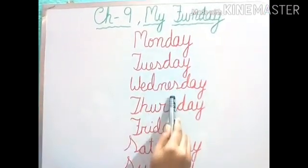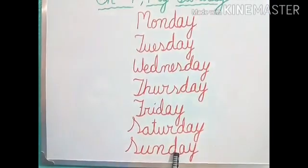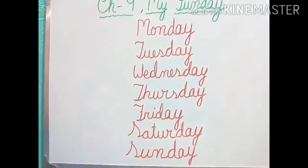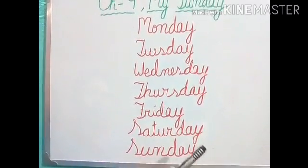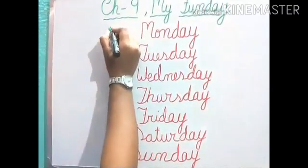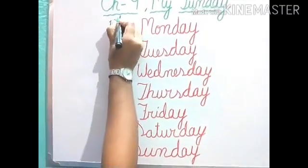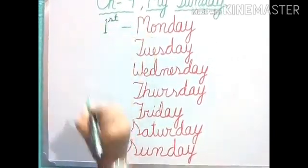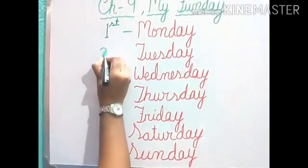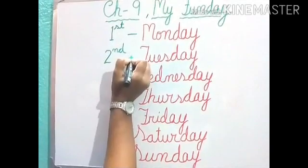And what you can see here? These are all the days names. And how many days are there? 7 days. So first we will start from Monday. Monday is the first day of the week. Then Tuesday — Tuesday is the second day of the week.